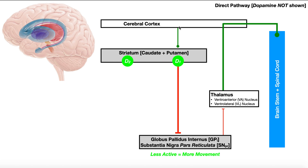When the cerebral cortex commands the striatum to activate, the striatum then releases that inhibition on the thalamus and the thalamus can therefore lead to muscle contraction. The thalamus actually relays information back to the motor cortex of the cerebral cortex, and then it goes down from the brainstem to the spinal cord to specific muscles. So the key is: if you want contraction, you have to activate the thalamus and you have to inhibit the globus pallidus internus. This is the direct pathway without dopamine or the substantia nigra shown.